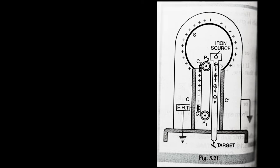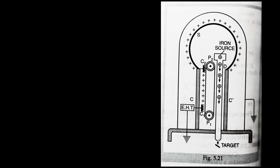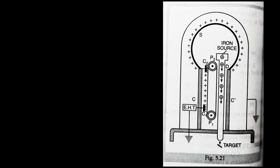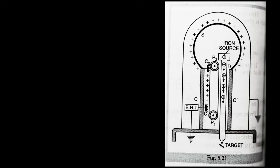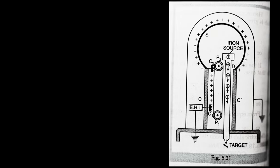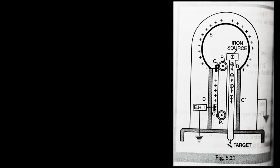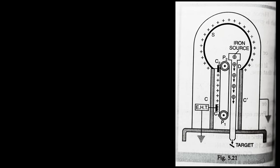A Van de Graaff generator of this type was installed at the Carnegie Institute in Washington in 1937. One such generator was installed at the Indian Institute of Technology, Kanpur, in 1970, and it accelerates particles to 2 MeV energy.